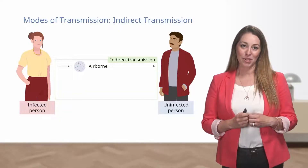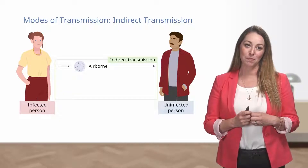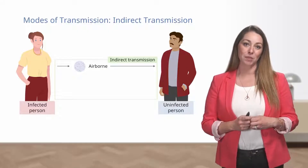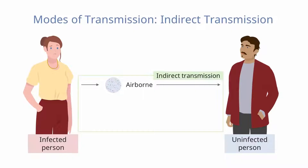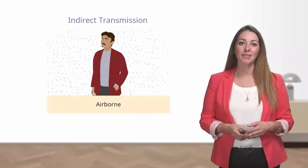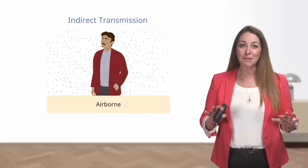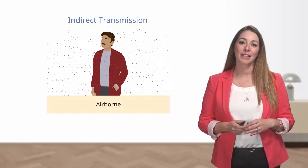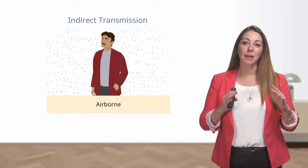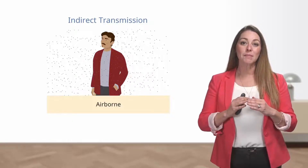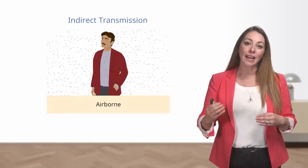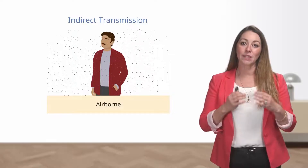Next, we have indirect transmission, and there are several types. One of these is airborne transmission. Airborne transmission occurs when infectious agents are carried by dust suspended in the air. Because of the small size and weight of the droplet nuclei, they can remain suspended in air for long periods of time before being inhaled into the respiratory system of a host. With airborne transmission, direct contact or even close proximity is not needed to spread disease. Droplet nuclei remain airborne for long periods, may disseminate widely in an environment, and can be acquired by a host even without direct contact with the infected person.